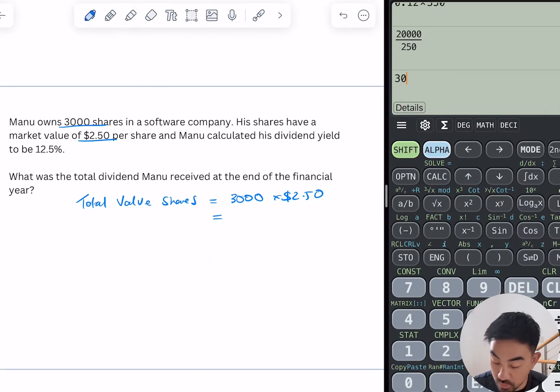3,000 times 2.50, so in total it's worth $7,500.